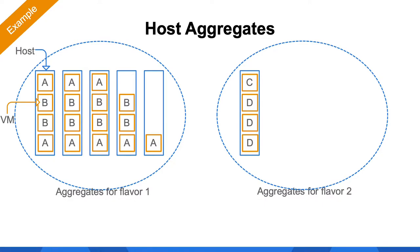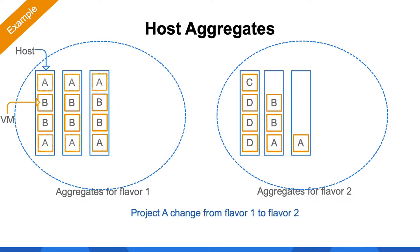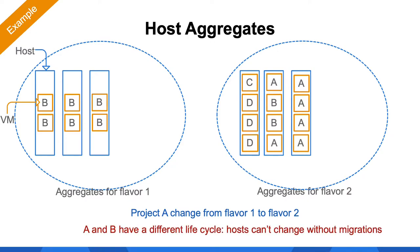Another problem is when the capacity of one host aggregate reduces or projects change flavors. For example, with two flavors and two aggregates, if Project C decides to change their flavor to flavor 2, the capacity needed to deploy flavor 1 reduces while the capacity needed for flavor 2 increases, so hosts must be moved from one aggregate to another. But moving the host does not change the VMs running on it. Project A may be redeployed as part of their capacity change, but Project B has no requirement to redeploy, so those VMs keep landing in the wrong aggregate. Host aggregates work well if you just grow capacity, but if your capacity changes frequently they are hard to maintain, requiring a lot of operational work and VM migrations.